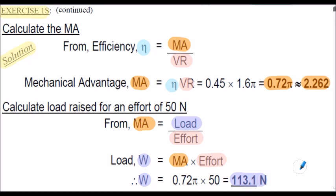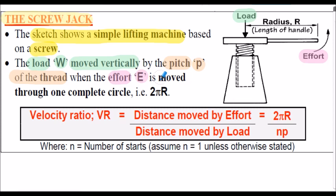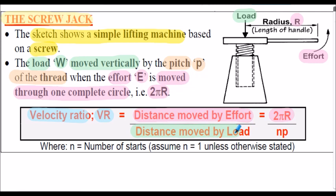Let's consider the screw jack. The sketch shows a simple lifting machine based on a screw. The load W is moved vertically by the pitch p of the thread when the effort E is moved through one complete circle — a distance of 2 pi r, the circumference, where r is the radius or length of the handle. To calculate the velocity ratio VR: that's the distance moved by the effort (2 pi r) divided by the vertical distance moved by the load (number of starts multiplied by the pitch). So VR equals 2 pi r divided by n times p.